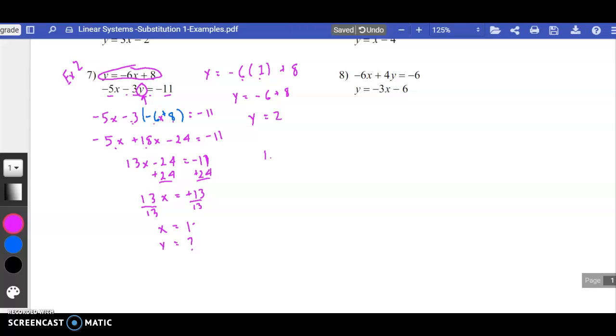So my answer is 1 comma 2. That is the solution to those two equations. If I were to plug 1 and 2 into this first equation, I would have the left-hand side equals right-hand side. And if I plugged 1 and 2 for x and y into this equation, then I would also have left side equals right side. And that's it for number 2. Thank you.